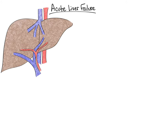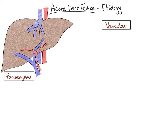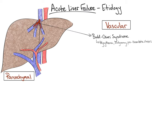Next, let's create a framework for identifying the etiology of acute liver failure. We will use the framework to help guide our initial workup. We can break down causes of acute liver failure into two major categories: vascular and parenchymal. Let's start with the vascular category. Patients can develop acute hepatic vein thrombosis, known as Budd-Chiari syndrome, which is often associated with polycythemia, malignancy, and other prothrombotic states.